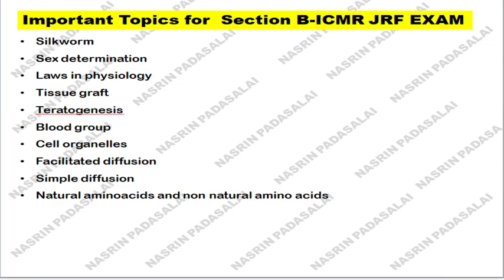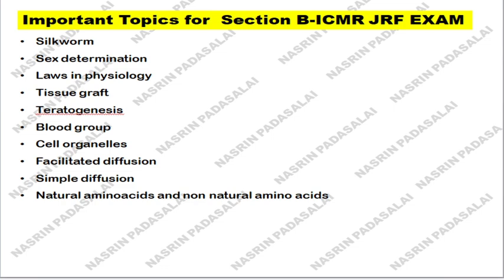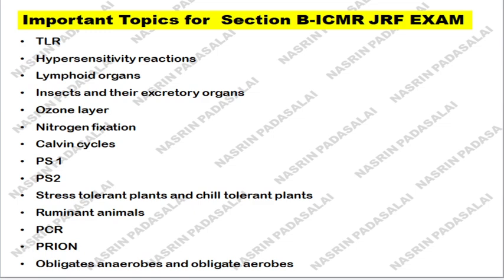Next, know about teratogenesis, blood groups, cell organelles, facilitated diffusion, simple diffusion, and natural versus non-natural amino acids — know the structure of each amino acid and which particular group each amino acid consists of. Next, know about TLR, hypersensitivity reactions, primary lymphoid organs, and secondary lymphoid organs. Also study about the insect respiratory system. Next, know about the ozone layer, nitrogen fixation, denitrification pathway, and which organisms are involved in nitrogen fixation. Next, Calvin cycle, photosystem I, and photosystem II. With respect to plants, know about stress-tolerant plants and chilling-tolerant plants.